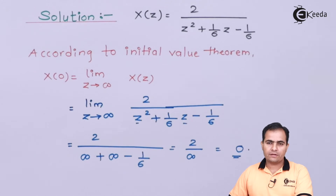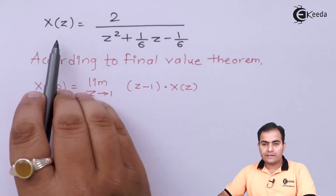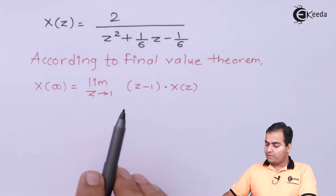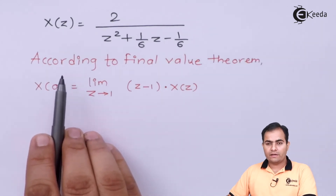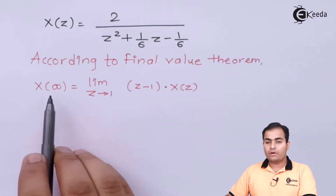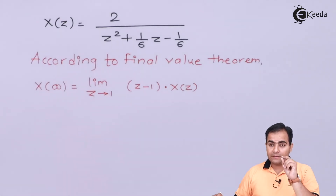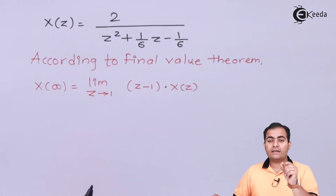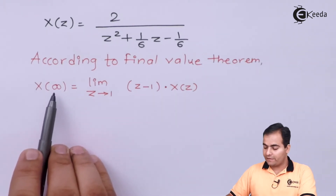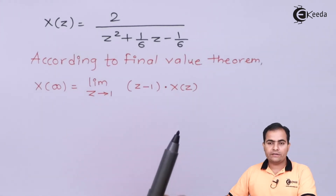Now we move to the final value theorem. We are going to find the final value of X(Z) = 2 / (Z² + (1/6)Z − 1/6). The final value means we find the response of X(Z) when n is at infinity, so we compute X(∞). The formula is: limit as Z tends to 1 of (Z − 1) × X(Z).